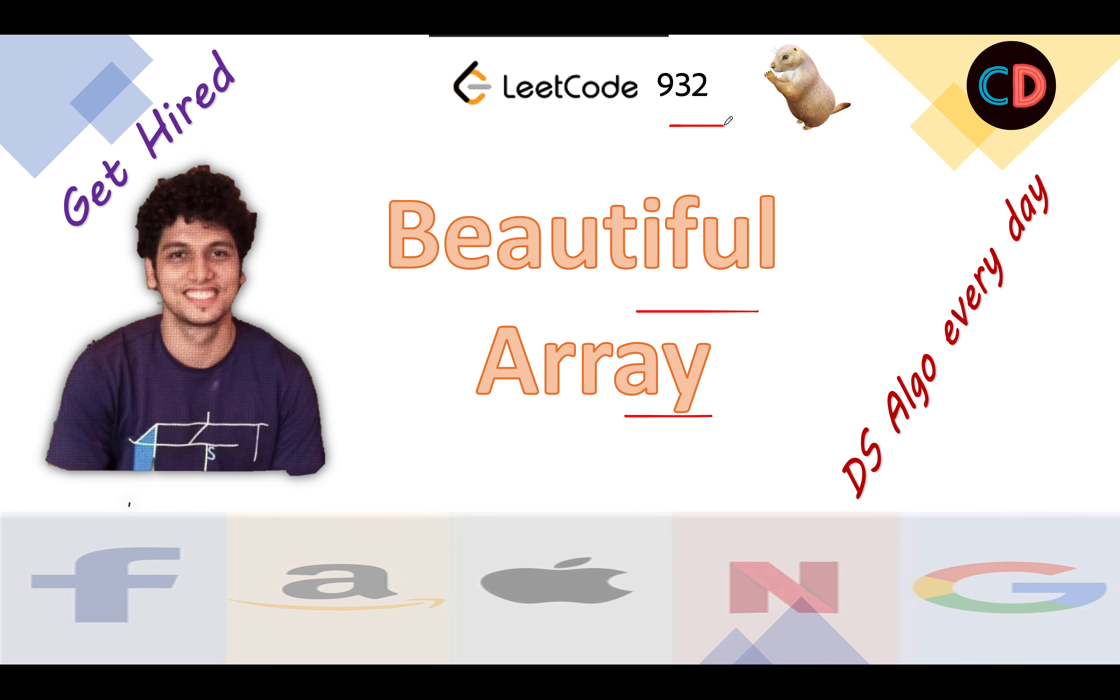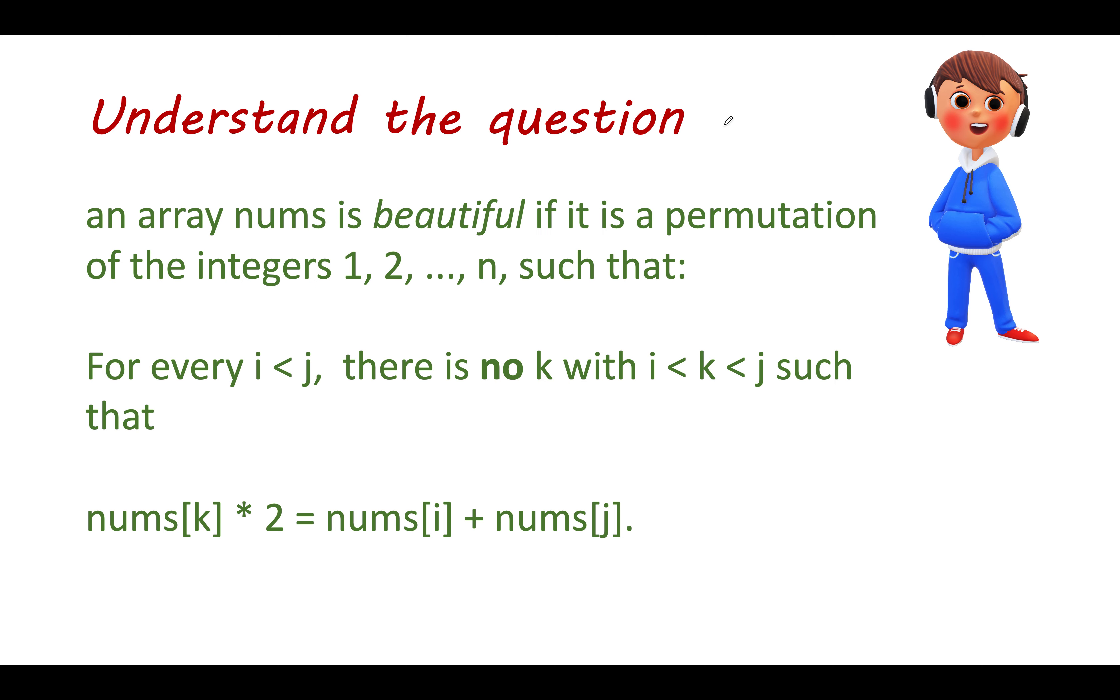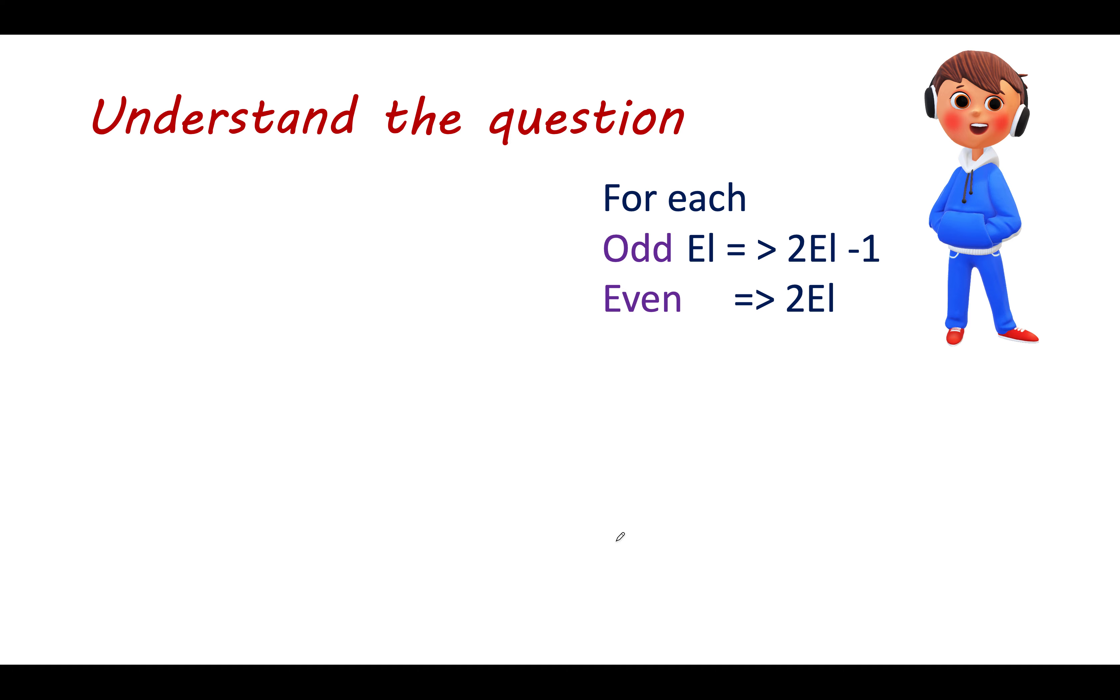Beautiful Array, LeetCode 932. Let's again try and understand the question. We need to permutate all numbers from 1 up till n such that for every i,j there is no index k such that nums[k] * 2 equals nums[i] plus nums[j]. For solving this there is a pattern. I'm not sure who identified this pattern at first place, but whoever did did a great job. If you know what kind of pattern you need to follow, you'll be able to solve this question. If you don't know that pattern, nobody on earth can tell you that, especially in an interview. It's very difficult to come up with it.